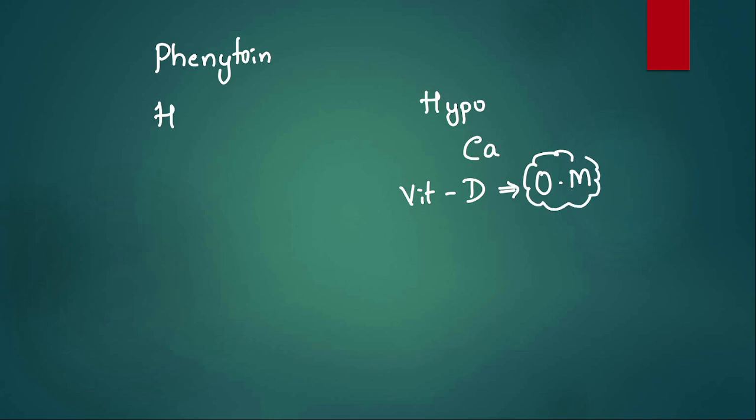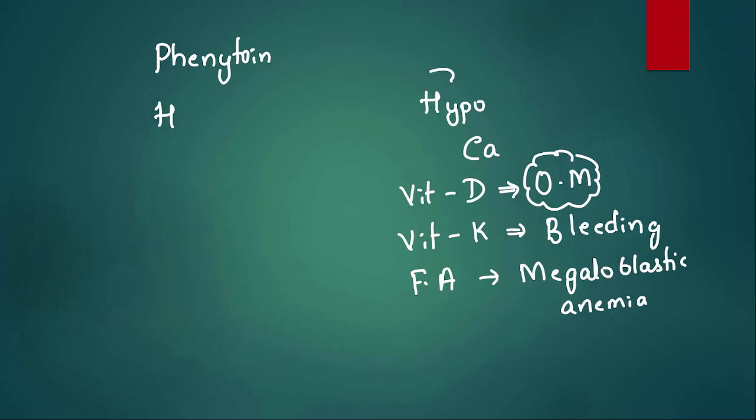Ethosuximide doesn't have major adverse effects except sedation, but the other three drugs are very important. Let me first take up phenytoin. Phenytoin is also called a hydantoin derivative. It has most adverse effects starting with H. It can cause hypo - there are four hypo you need to remember. It decreases calcium, hypocalcemia. It decreases vitamin D. Three vitamins are down. What happens if vitamin D is down? It will lead to osteomalacia. It decreases vitamin K, so there is risk of bleeding. It also decreases folic acid and decrease in folic acid can lead to megaloblastic anemia. This is the hypo with phenytoin.